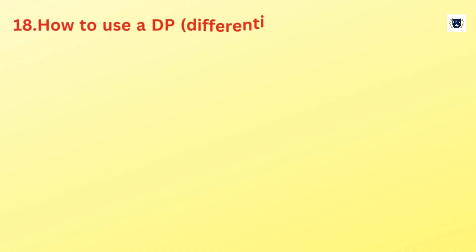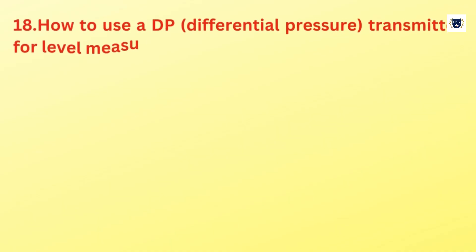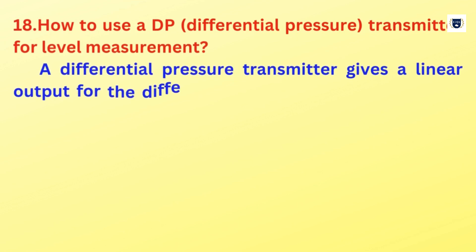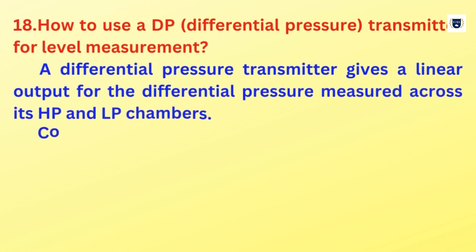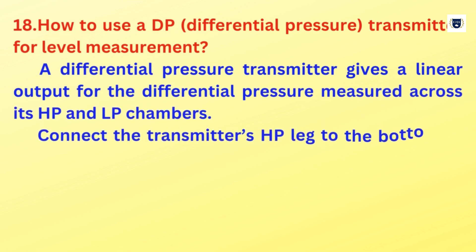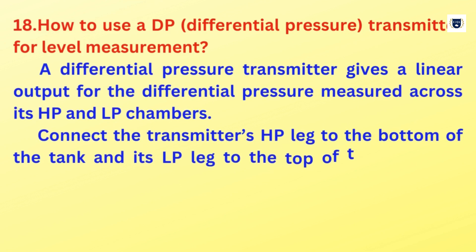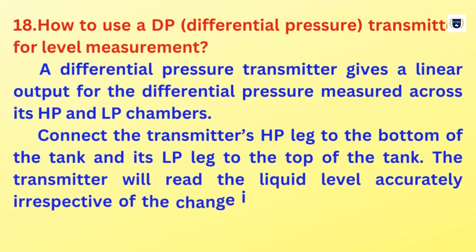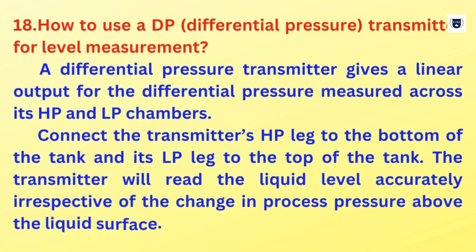How to use a DP (Differential Pressure) transmitter for level measurement? A differential pressure transmitter gives a linear output for the differential pressure measured across its HP and LP chambers. Connect the transmitter's HP leg to the bottom of the tank and its LP leg to the top of the tank. The transmitter will read the liquid level accurately irrespective of the change in process pressure above the liquid surface.